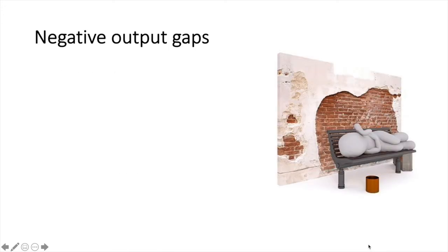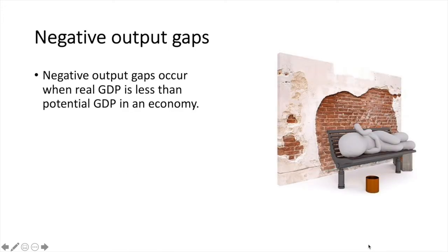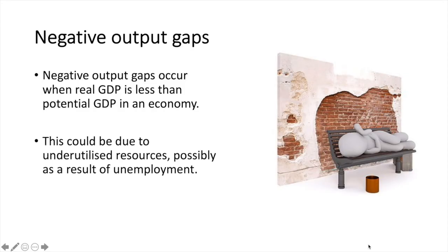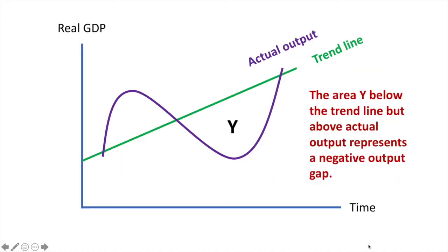Negative output gaps occur when real GDP is less than potential GDP in an economy. This could be due to underutilized resources, possibly as a result of unemployment. Area Y represents a negative output gap on this trade cycle diagram.